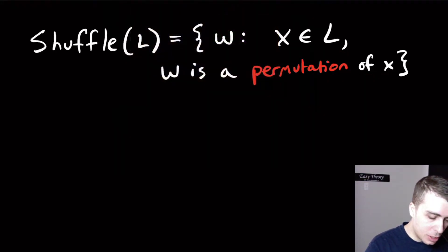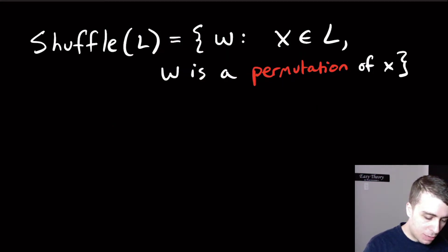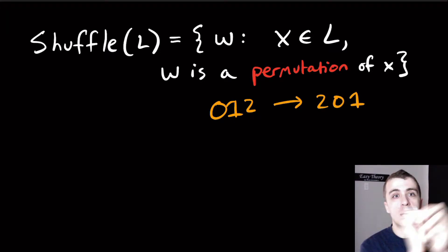A permutation is just a reordering of the characters. For example, if we have 0, 1, 2, then a permutation of this would be 2, 0, 1. You just rearrange the characters in whatever way that you wish.